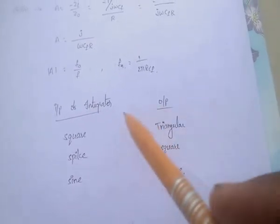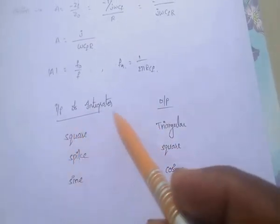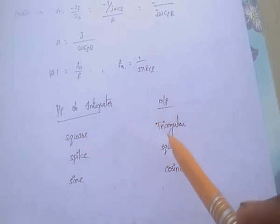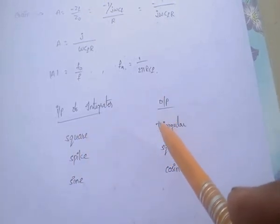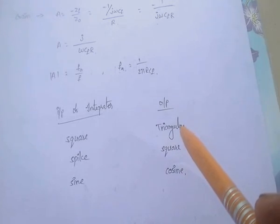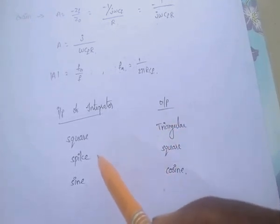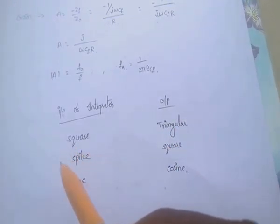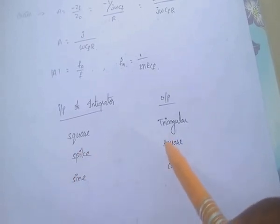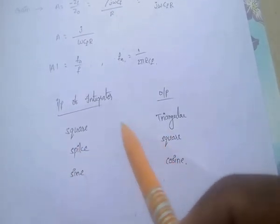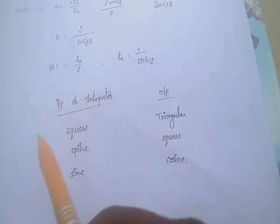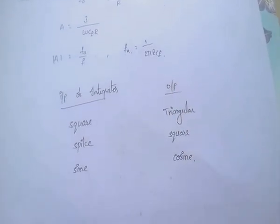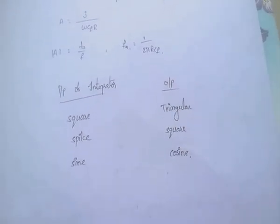If the input of the integrator is square wave, the output is triangular wave. If the input of the integrator is sine wave, the output is cosine wave.